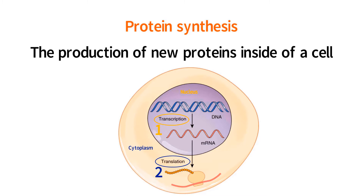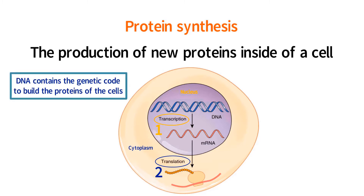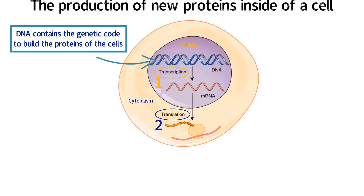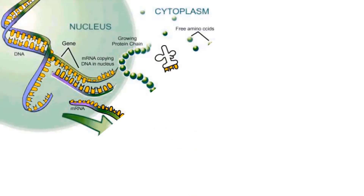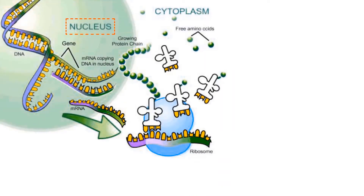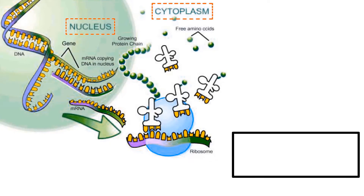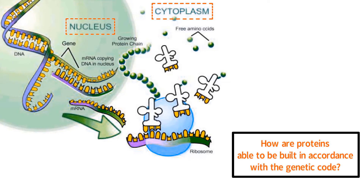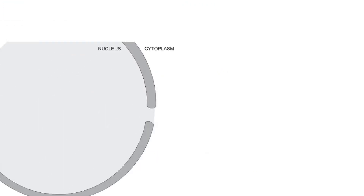For proteins to be made properly, the genetic code for how to build the protein must be followed. DNA contains the genetic code to build the proteins of the cells; however, DNA is located in the nucleus, not the cytoplasm. Considering the code to build proteins is located in the nucleus yet protein synthesis occurs in the cytoplasm, the question arises: how are proteins able to be built in accordance with the genetic code?